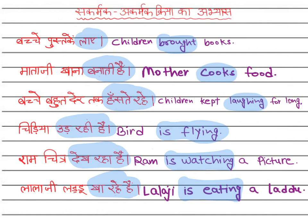These highlighted words in blue are the verbs in these sentences, and these underlined words in yellow are their associated objects. We do not have any objects for this sentence and this sentence. As we know, verbs with objects are Sakarmakriya and verbs without objects are Akarmakriyas.